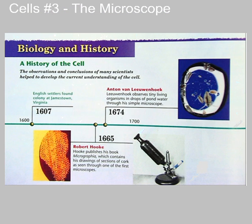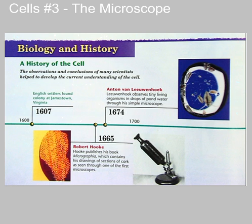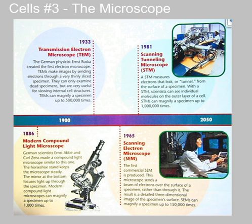Hooke's microscope was more like ours — it was a compound microscope with more than one lens. A compound microscope has an eyepiece with a lens up here and another lens down at the other end. All of these early microscopes were light microscopes. They used light through lenses to see the images, like the microscopes that we use in class. The first modern compound light microscopes, very similar to the ones we use in class today, came about in the late 1800s.